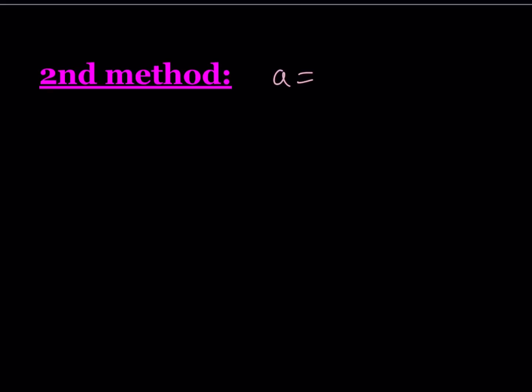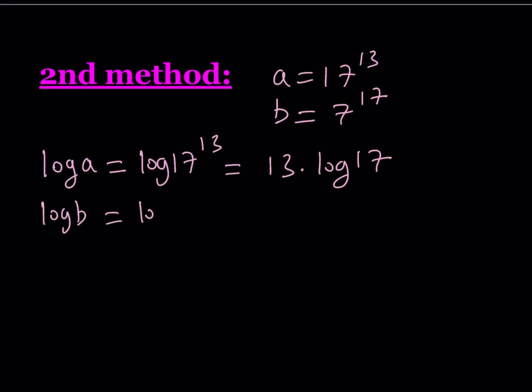Suppose a is equal to 17 to the power of 13 and b is equal to 7 to the power of 17. So I'm going to be logging a and b. The idea behind this is basically if I log both sides, I'm going to get rid of the exponents by using the properties of logs. Log a is going to be log 17 to the power of 13, and that can be written as 13 times log 17. And log b is going to be log of 7 to the power of 17, and that can be written as 17 times log 7.